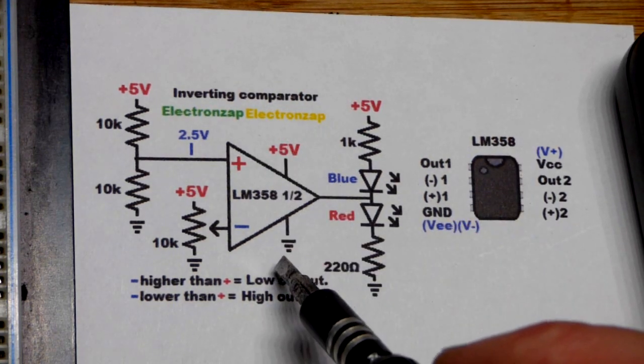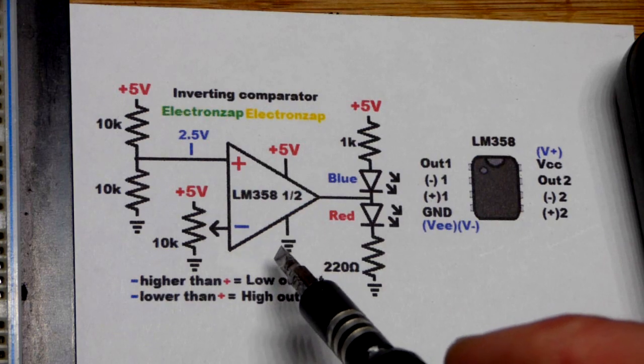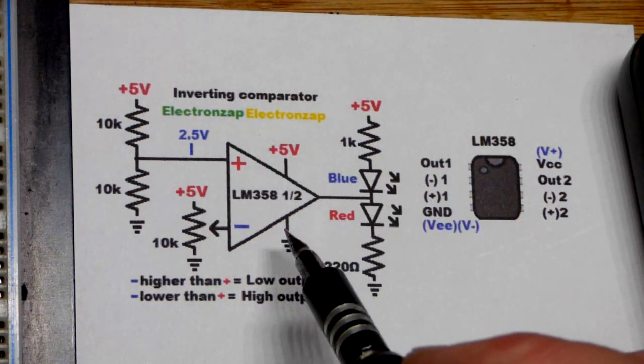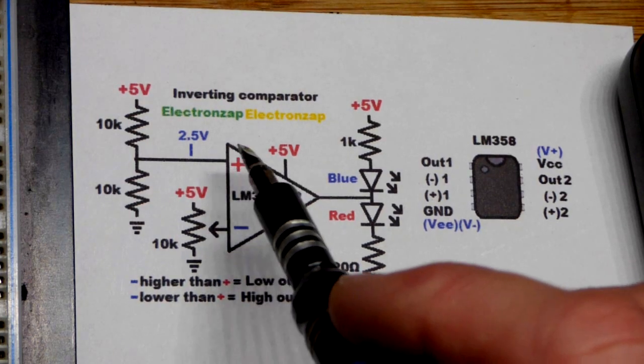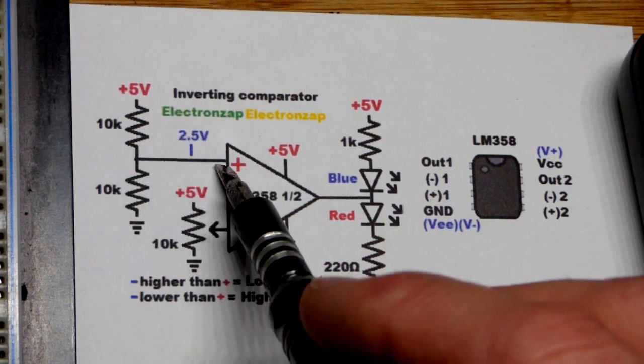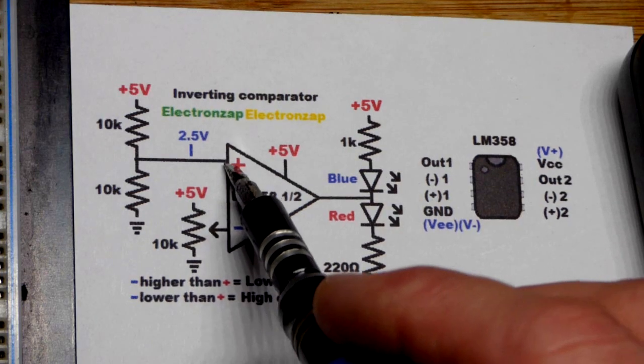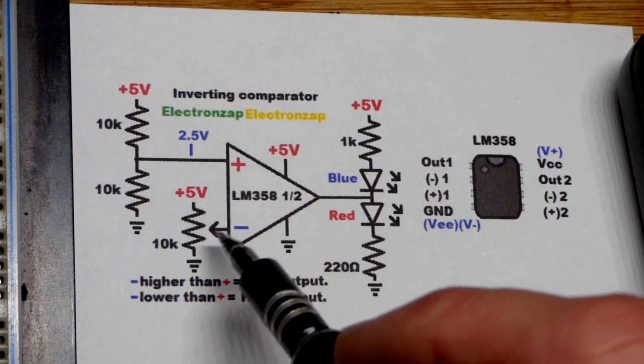They don't always show that on the schematic. For the inverting comparator, our reference voltage is going to the non-inverting input. And so we use two 10k resistors to get half of the supply voltage. You notice that it's higher on the schematic.